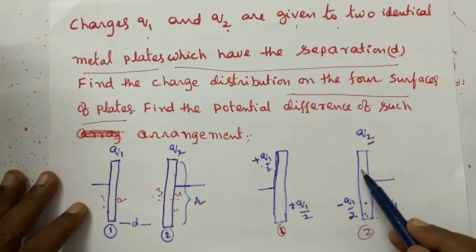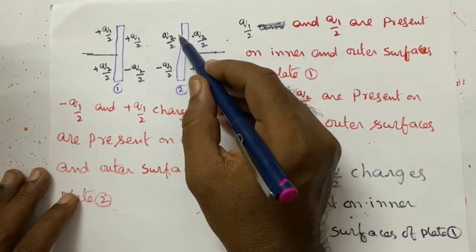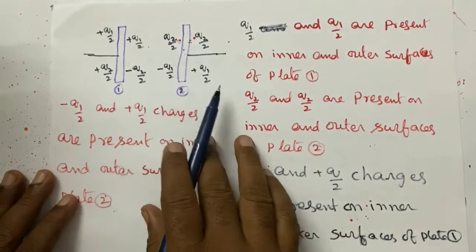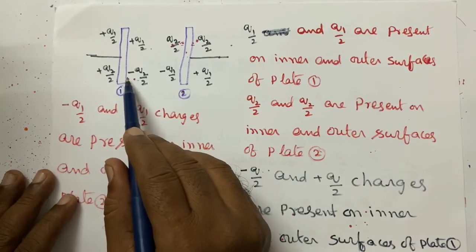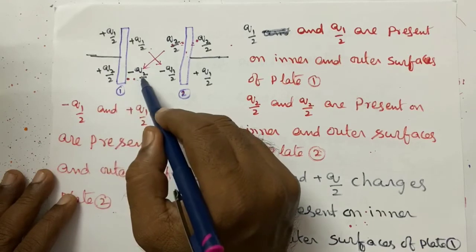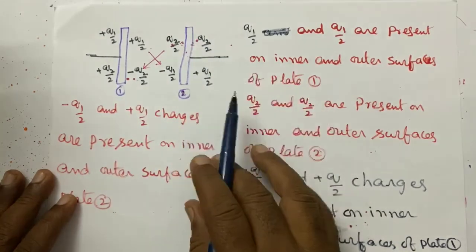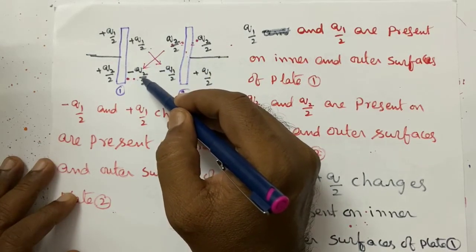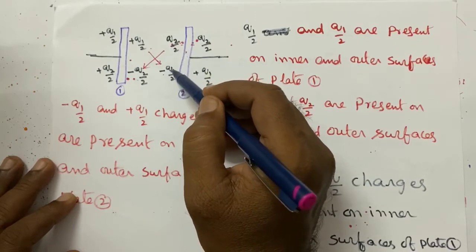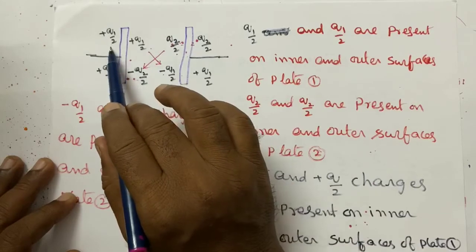Similarly, the charge Q2 on metal plate two is divided such that plus Q2/2 appears on the inner and outer surfaces. By induction, minus Q2/2 charges are induced on the inner surface of metal plate one, and plus Q2/2 is induced on the outer surface of metal plate one. So on the inner surface of plate two, we have plus Q1/2 minus Q2/2.